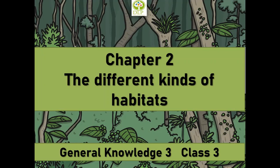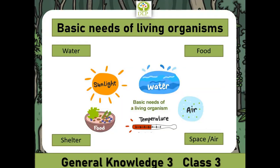Today we will learn Chapter 2: the different kinds of habitats, for General Knowledge 3 of Class 3. The basic needs of living organisms are water, food, shelter, and space.